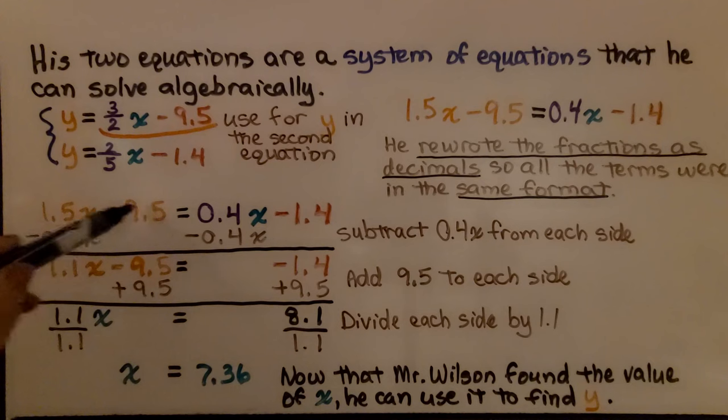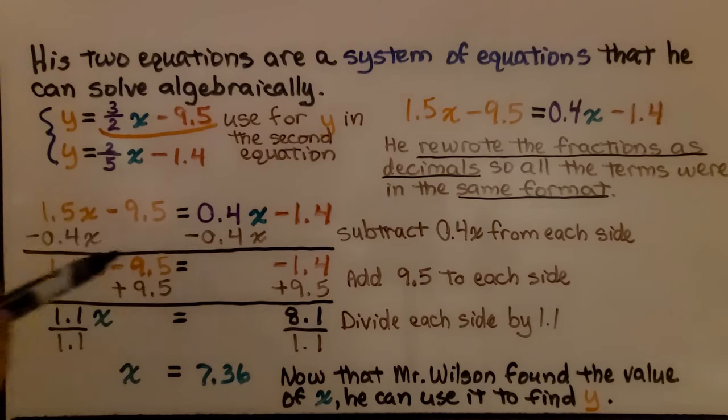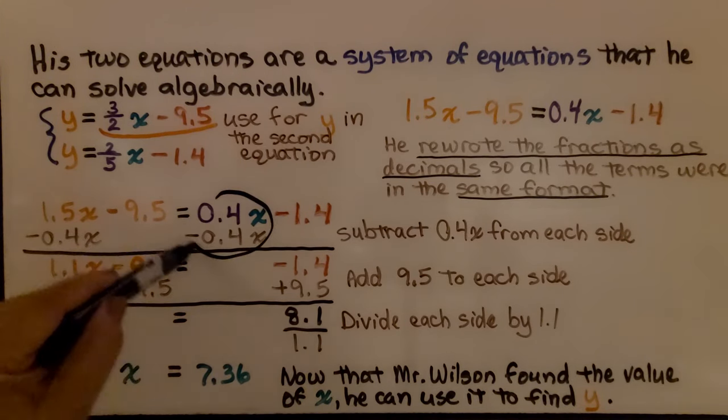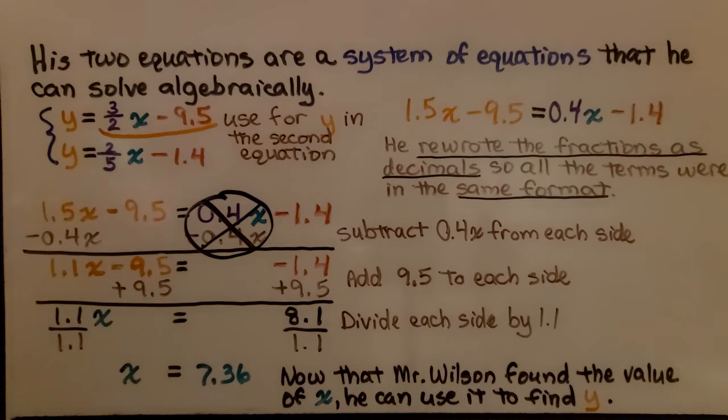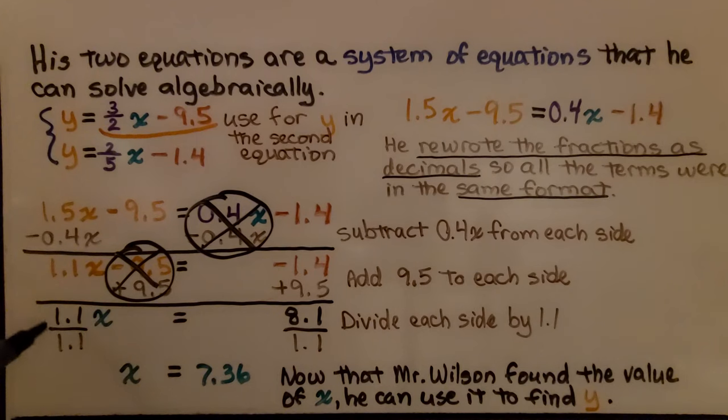We have our y and first thing we can do to isolate x is subtract 0.4x from each side of the equation. That's going to create a zero pair and eliminate it. So we only have negative 1.4 on this side. And on this side, we're going to have 1.1x minus 9.5. Now, we can add 9.5 to both sides. Now, we have 1.1x equals 8.1. We divide both sides by this coefficient, 1.1. That's going to give 1x. And on this side, as a decimal, we're going to get 7.36.